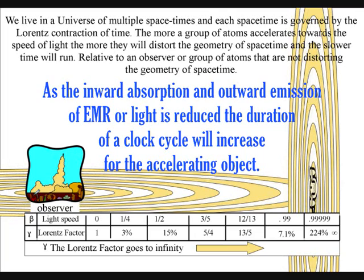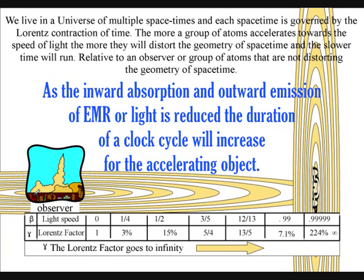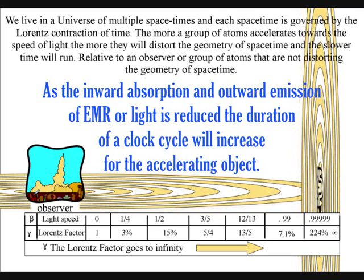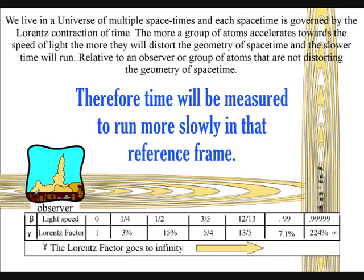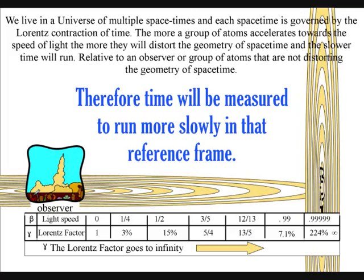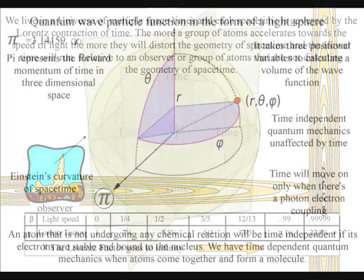As the inward absorption and outward emission of electromagnetic radiation is reduced, the duration of a clock cycle will increase for the accelerating object, and time will be measured to run more slowly in that reference frame.